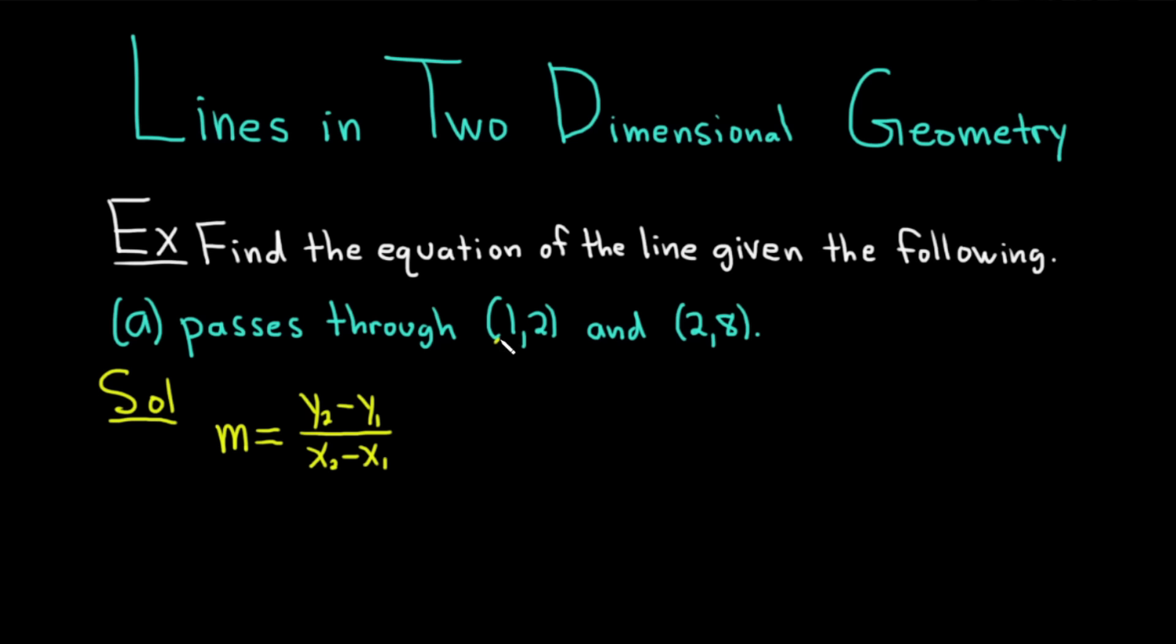So in this particular problem, we can just take this first ordered pair as x1, y1, and the second ordered pair as x2, y2. By the way, it doesn't matter which you pick. This is equal to, so let's see, y2 is 8.